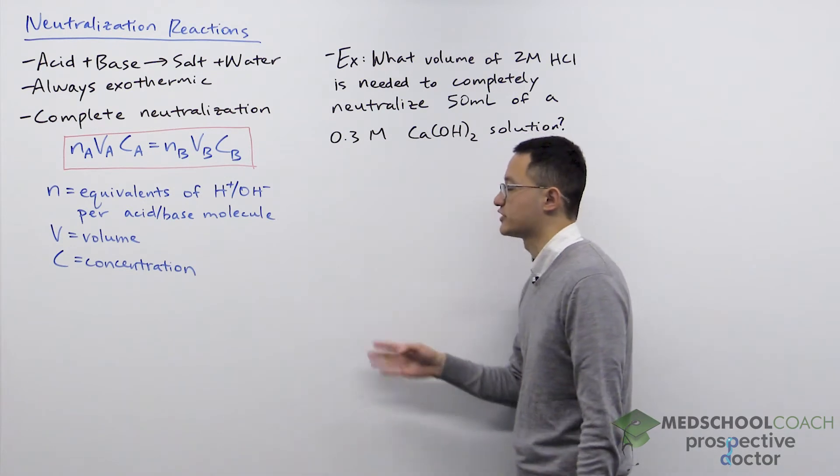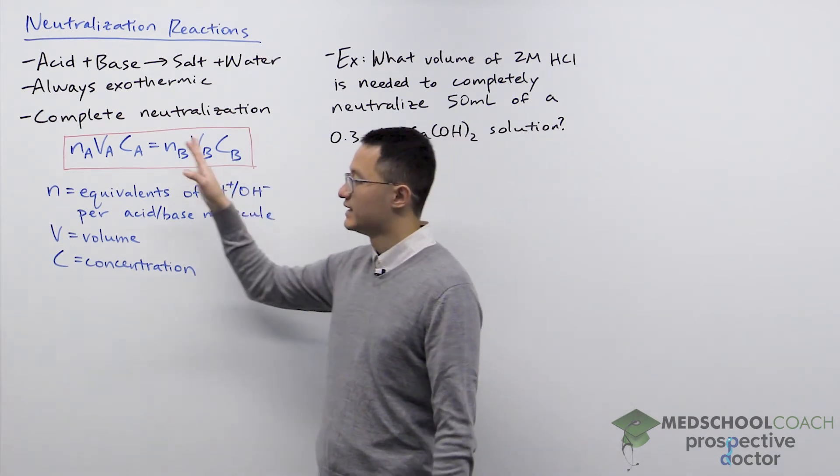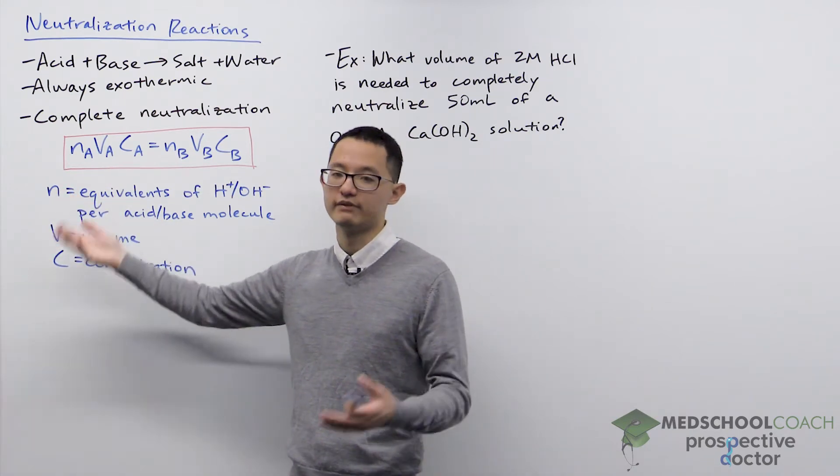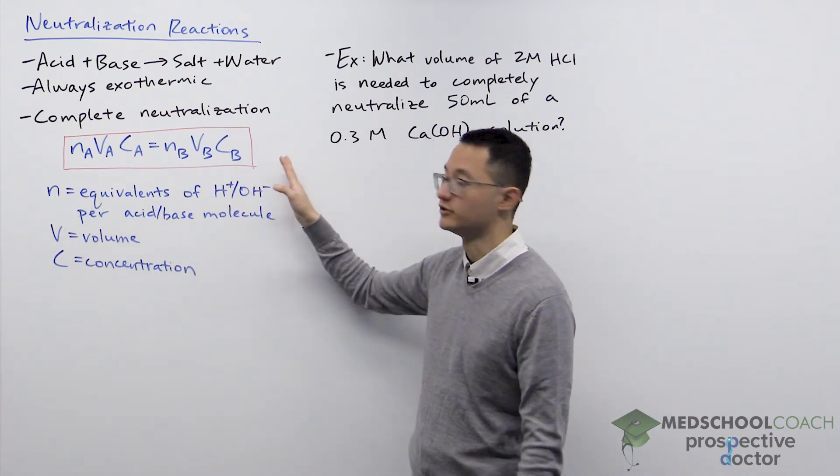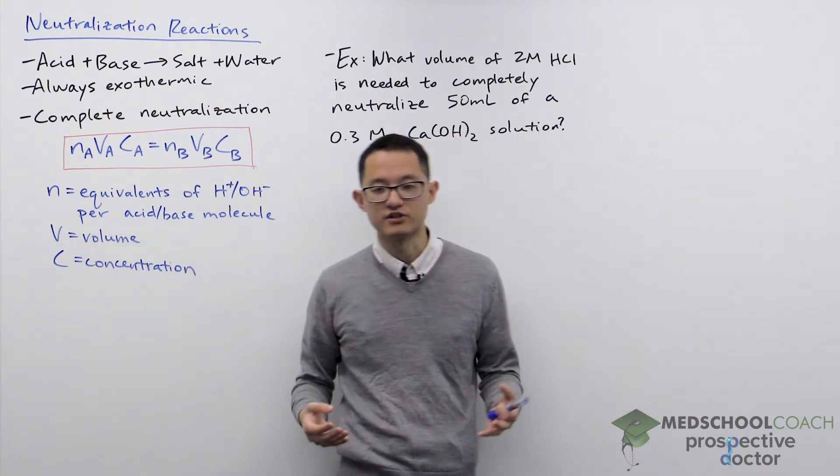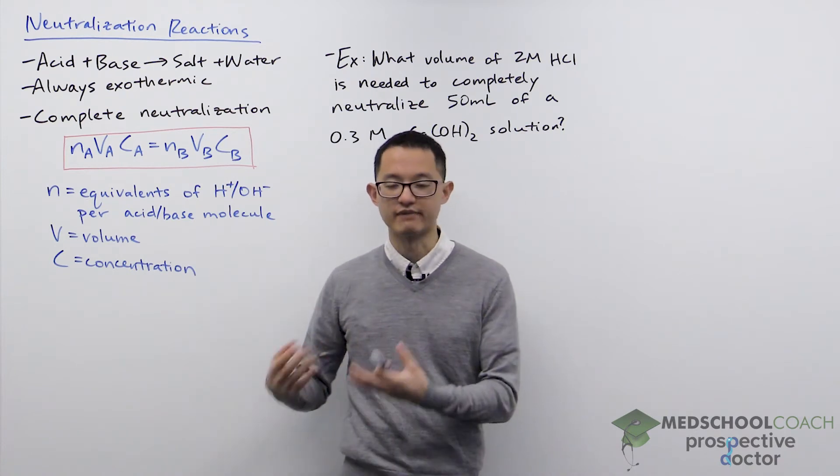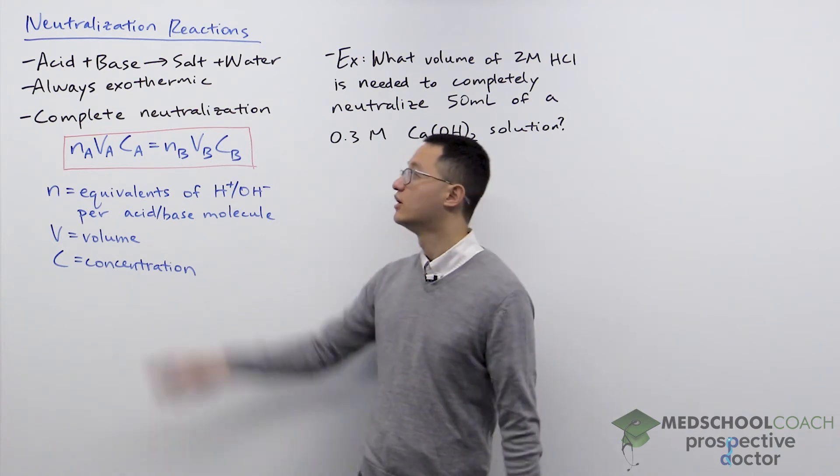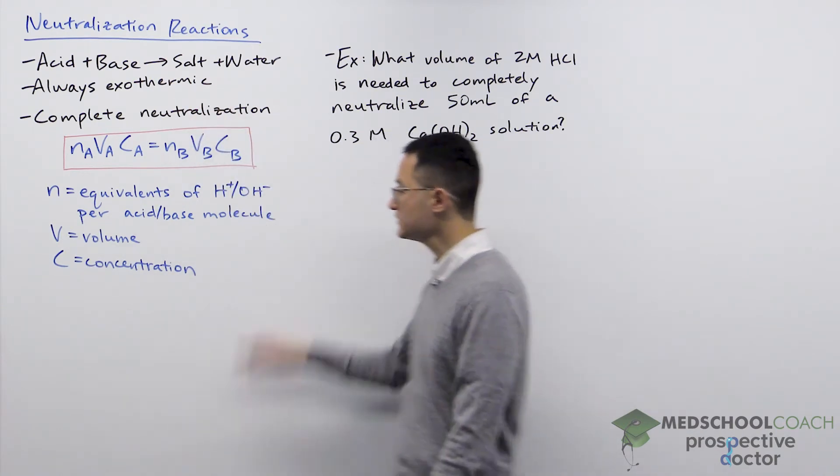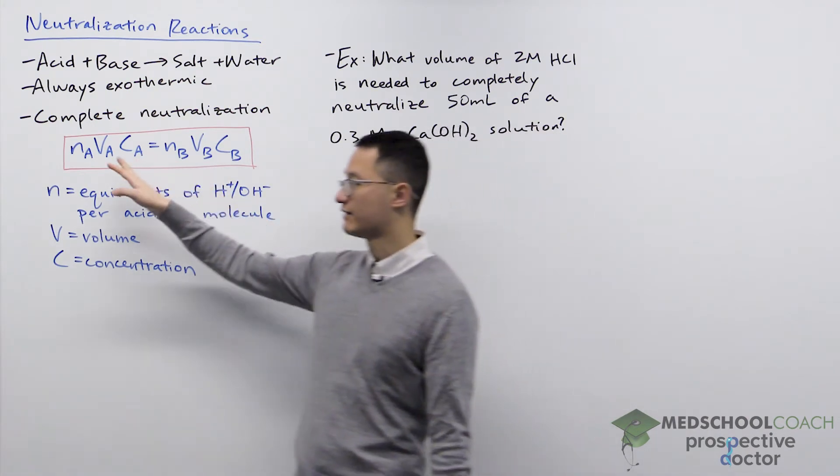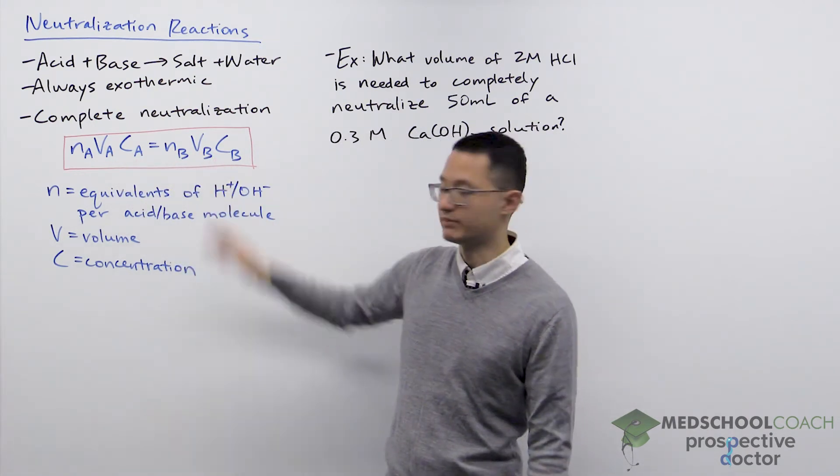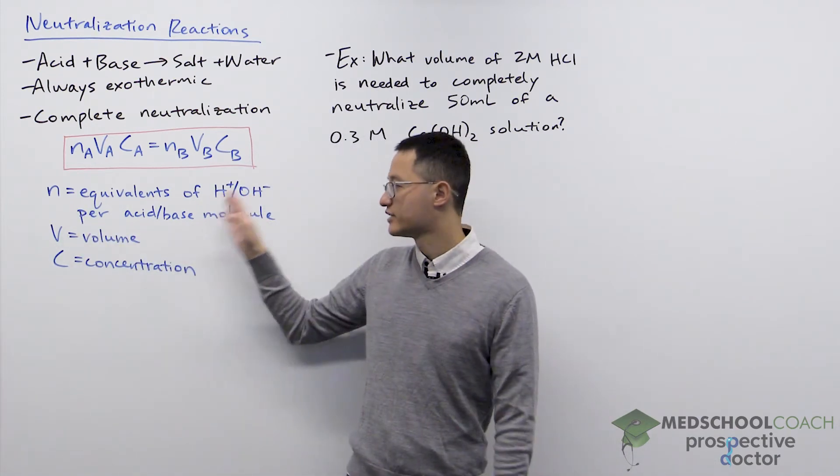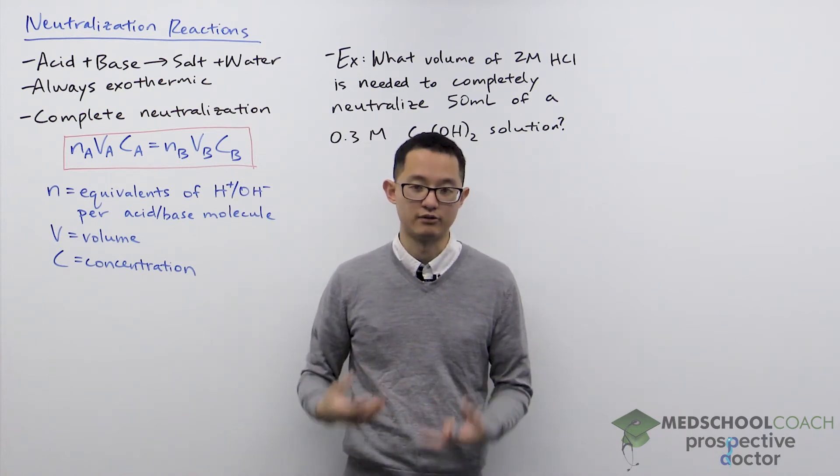Now a common question you might get on the MCAT about neutralization is calculating the concentration of an acid or base, or the volume of an acid or base necessary for complete neutralization. Complete neutralization means you have added equal quantities of acid and base so they completely cancel out and you're left with only the salt and water. You can do that calculation using this equation: NₐVₐCₐ = NᵦVᵦCᵦ. N refers to the equivalence of hydrogen ions or hydroxide ions per acid or base molecule.